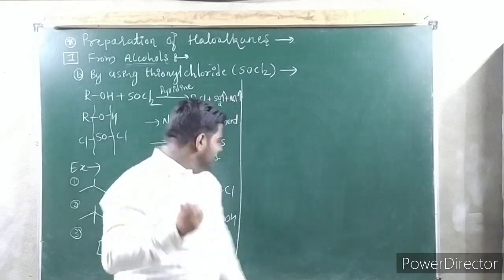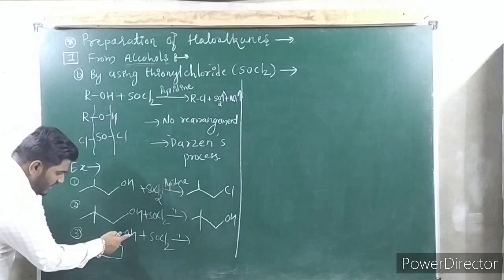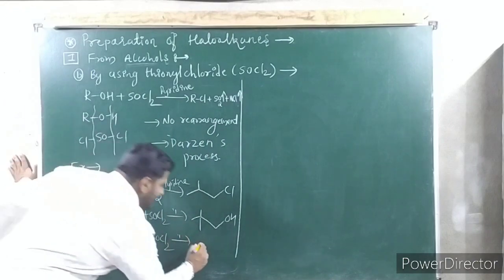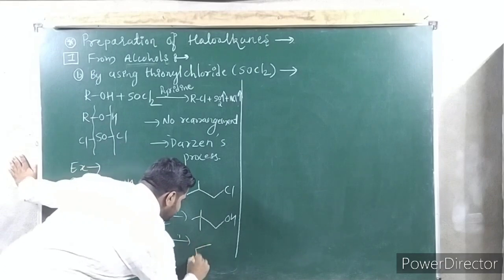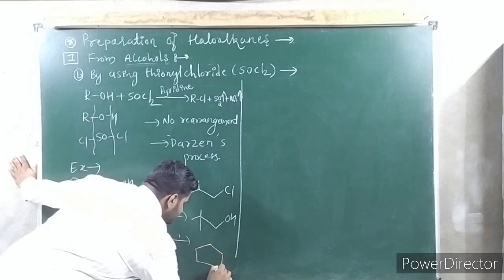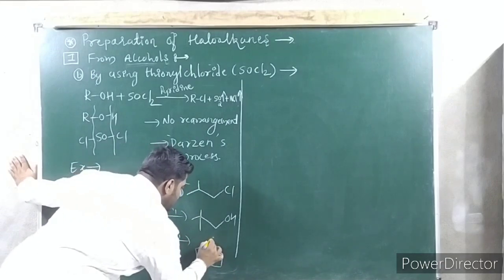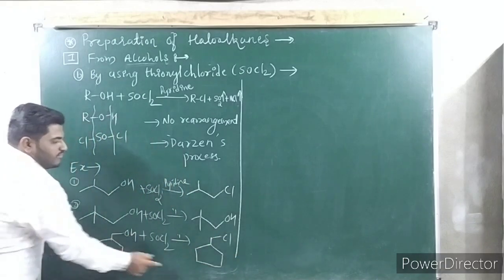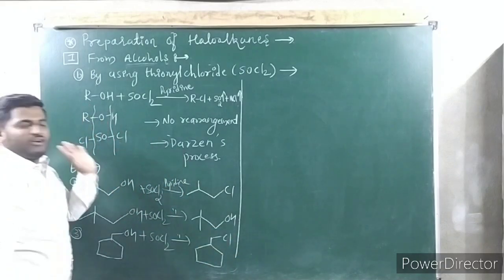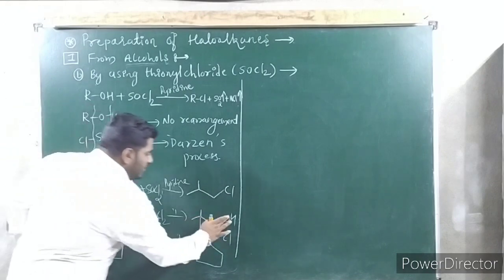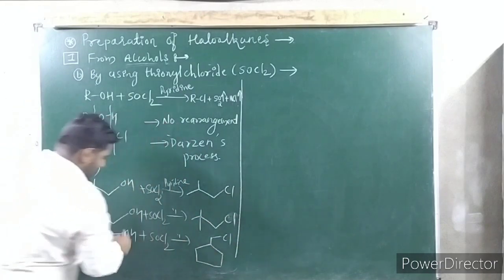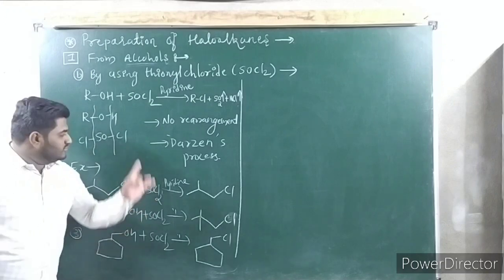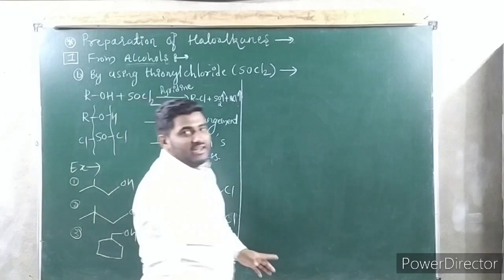Simple concept: wherever OH is there, replace by Cl. Here also OH is attached to this carbon — you replace OH by Cl and get the answer. And here also OH attached to the ring carbon — you add Cl in place of OH. These are some examples regarding this method.